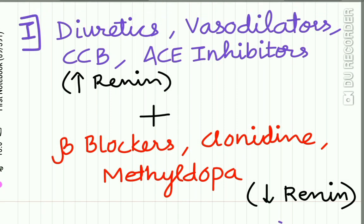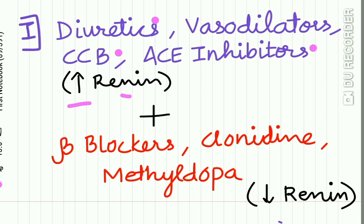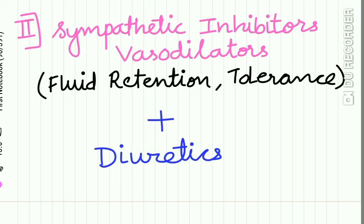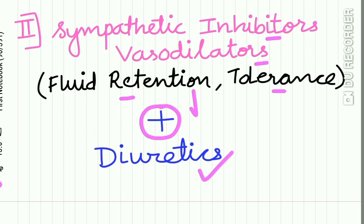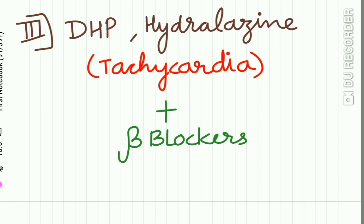The first combination: drugs which increase the plasma renin levels — such as diuretics, vasodilators, calcium channel blockers, and ACE inhibitors — are combined with drugs which lower the renin activity, such as beta blockers, clonidine, and methyldopa. The second combination: sympathetic inhibitors and vasodilators have a side effect of fluid retention and slow development of drug tolerance, so they are combined with diuretics, which reduce both fluid retention and drug tolerance.